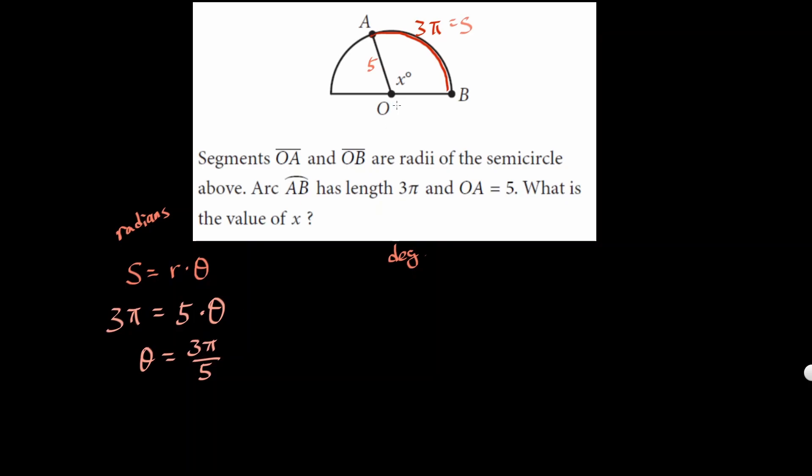But then you have to convert it back into degree form, so you have to multiply π on the bottom, 180 degrees on top. So π's cancel. Let's see, 5 goes into 180 three times here, 6 here, and then that gets converted.